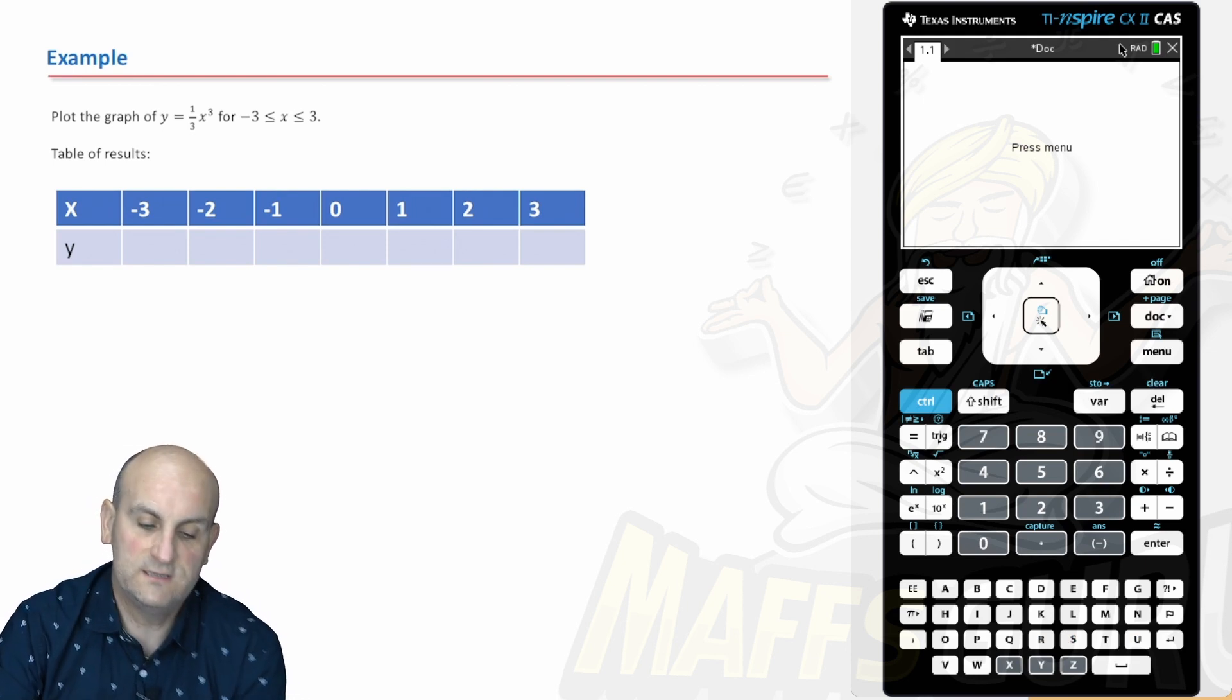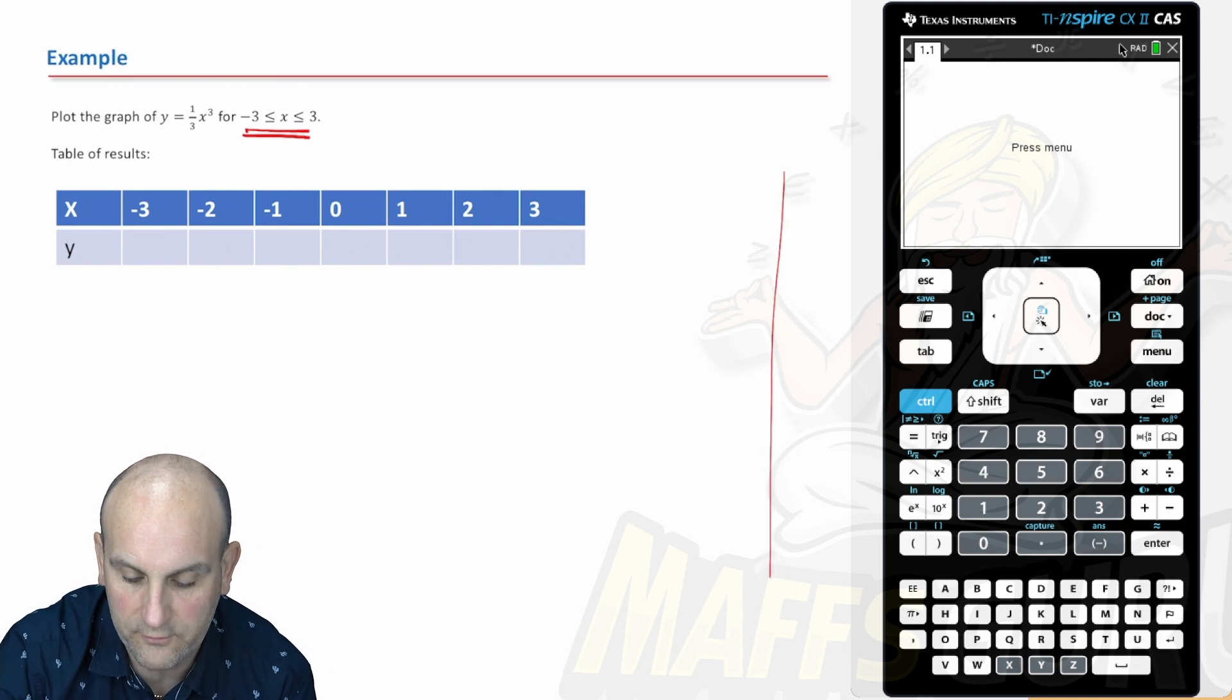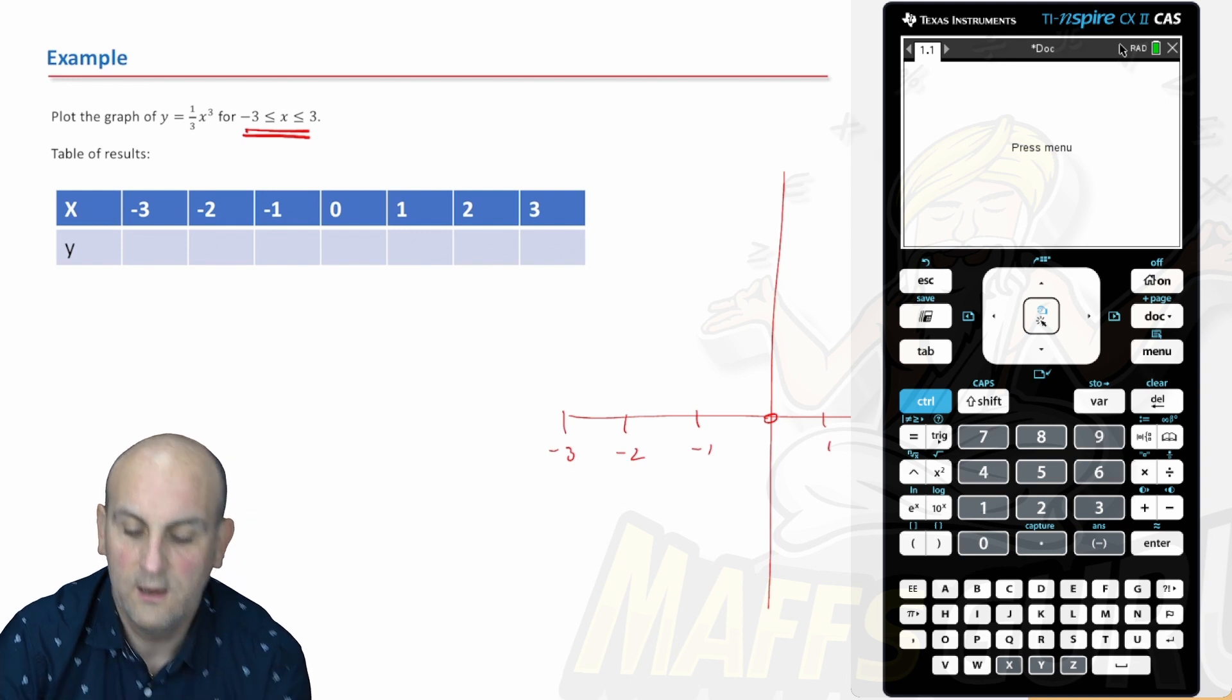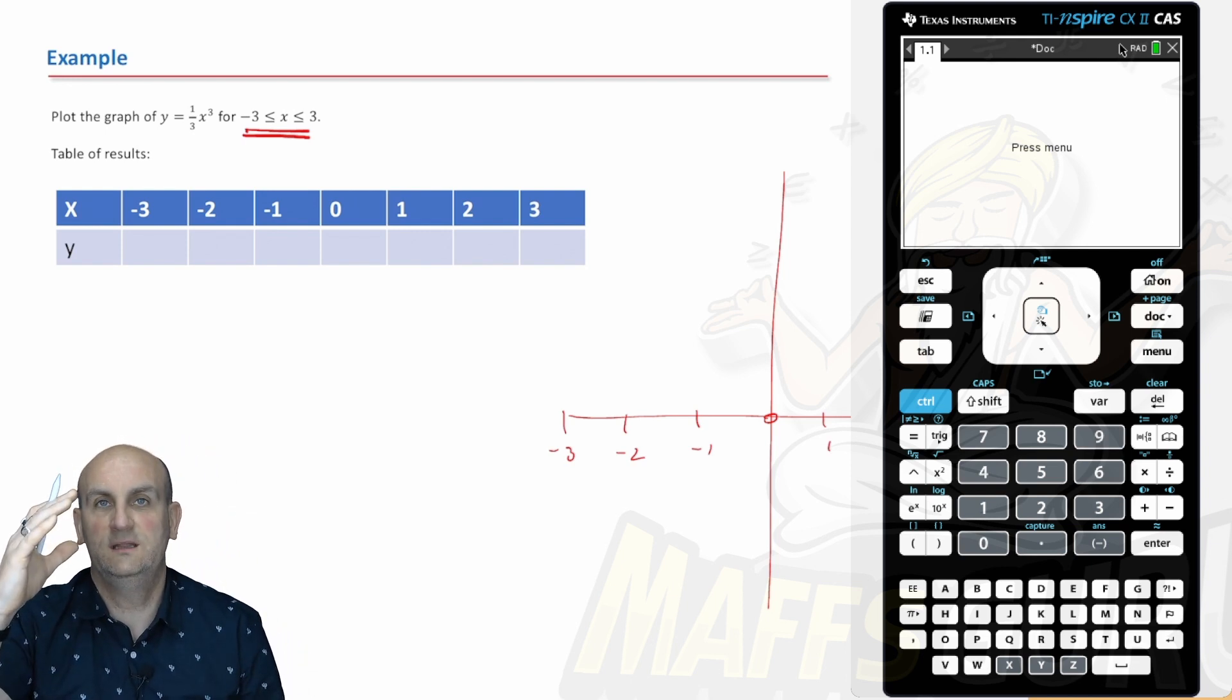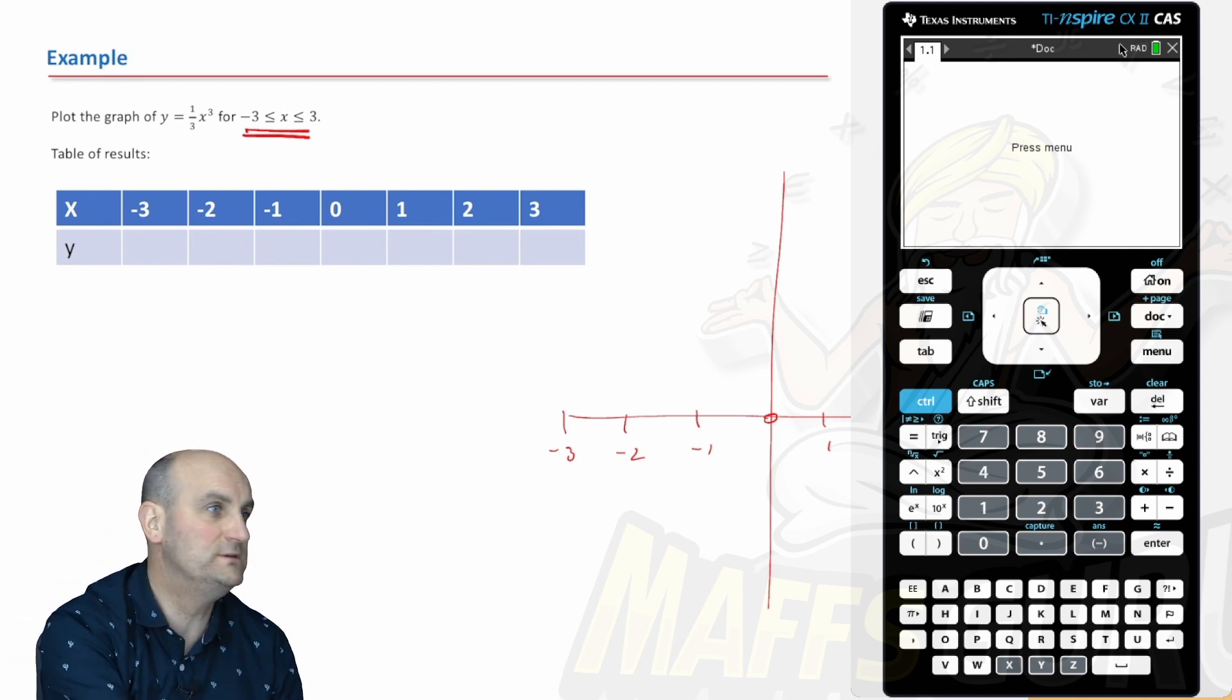We want a table of results. It says to allow our x values to fall between minus 3 and 3. So I would now be drawing a graph. There's 0, 1, 2, 3, minus 1, minus 2, minus 3. I don't know what my y value is going to be at this moment because I've got to calculate them. How am I going to do that? Very much use my CAS calculator. Hit menu, add a calculator.